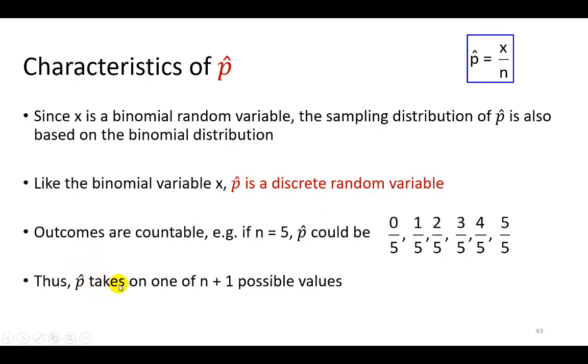We say that p hat takes on one of n plus 1 possible values. n is the sample size, in this case 5, plus 1 is 6. And if you count this, we have 6 likely outcomes.